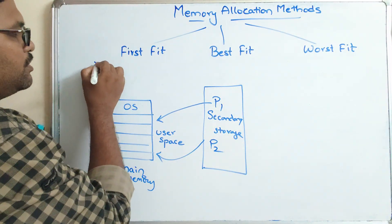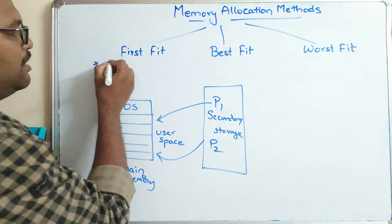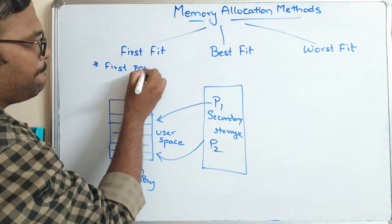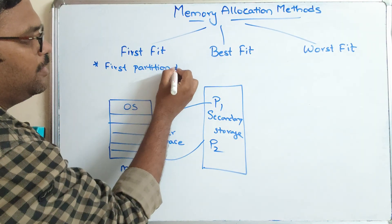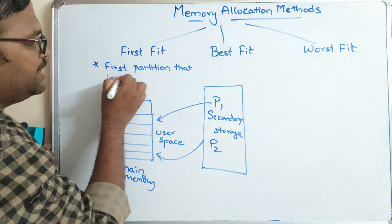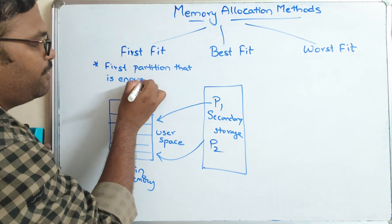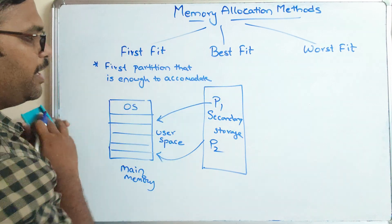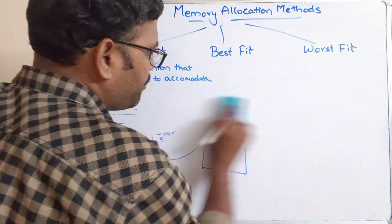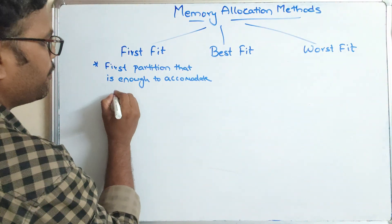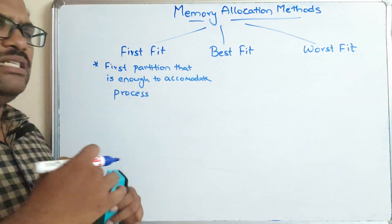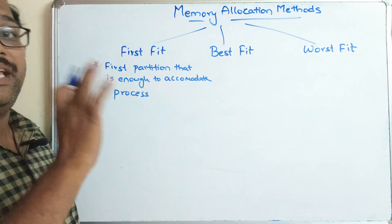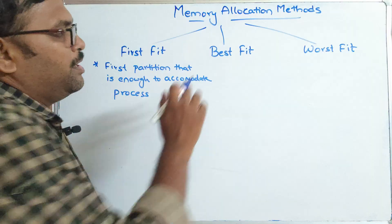Coming to First Fit: we have to select the first partition that is large enough to accommodate the process. Among all the partitions, we select the first one where the process can fit.